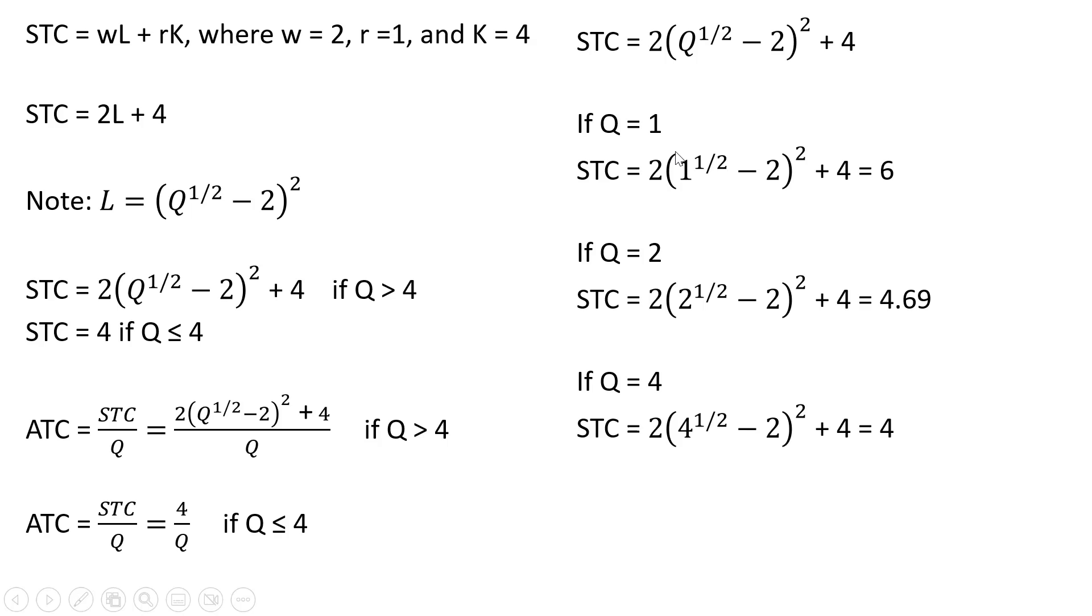So again, this is kind of strange behavior that over the early stages of production, as we're producing more output, short run total cost is actually falling. So that's why we're going to say that this short run total cost equation only applies when Q is greater than 4. And if Q is less than or equal to 4, short run total cost is just going to be constant at $4.